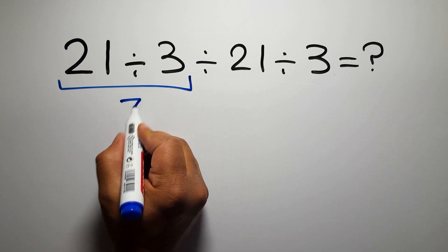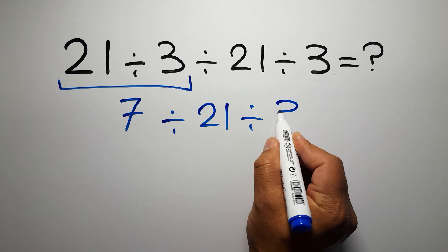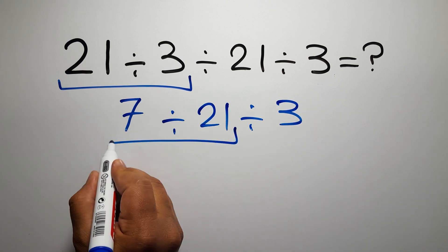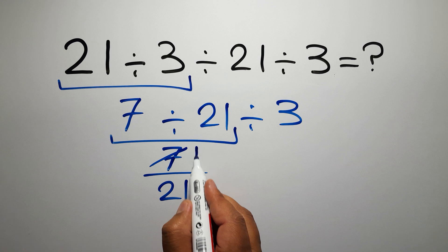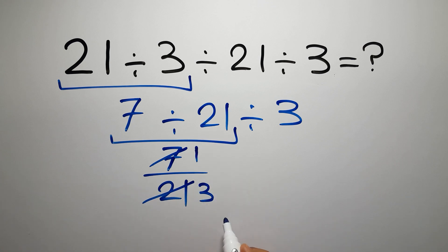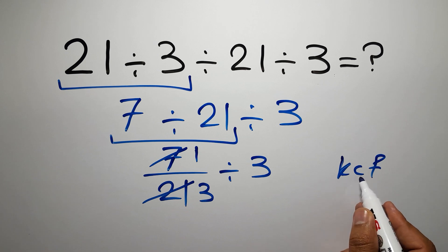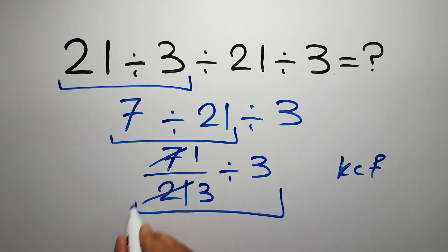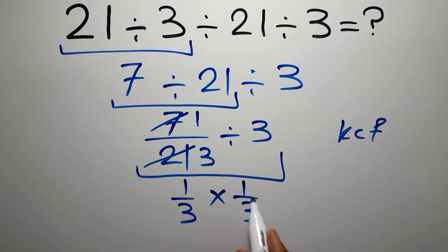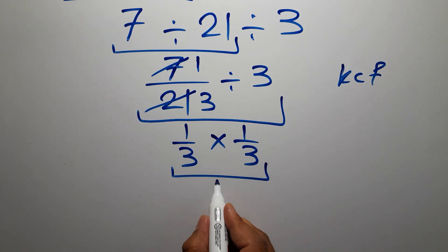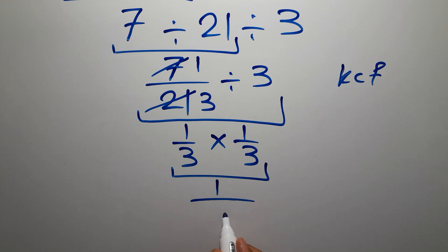21 divided by 3 gives us 7, so 7 divided by 21 divided by 3. 7 divided by 21 can be written as 7 over 21, and 7 divided by 7 is just 1, so 21 divided by 7 gives us 3. So we have 1 over 3 divided by 3. According to the KCF rule — K stands for Keep, C stands for Change, and F stands for Flip — we keep the first fraction, change division to multiplication, and flip the second fraction. So we have 1 over 3 times 1 over 3, which equals 1 over 9.